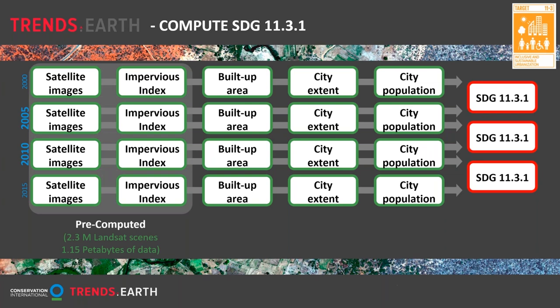The first step of calculating the impervious surface index is actually precomputed in the tool — you'll work with precomputed impervious surface index maps which you then convert into maps of city extent using the options within the tool. The tool draws on an existing dataset — the Global Manmade Impervious Surface (GMIS) dataset, which is a global map of impervious surface area for the year 2010. This 2010 GMIS data is used as training data to develop a random forest model, allowing us to map an impervious surface area index for other time periods.